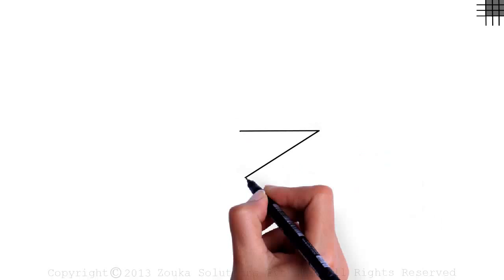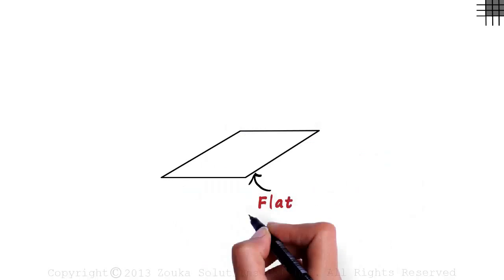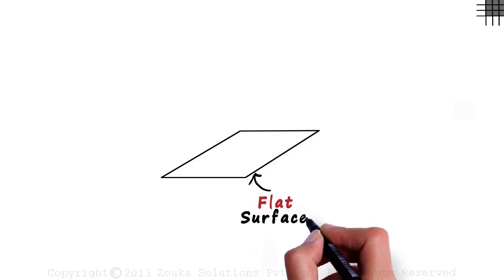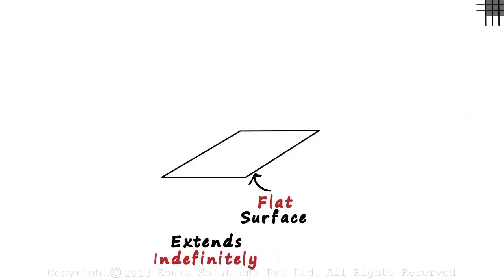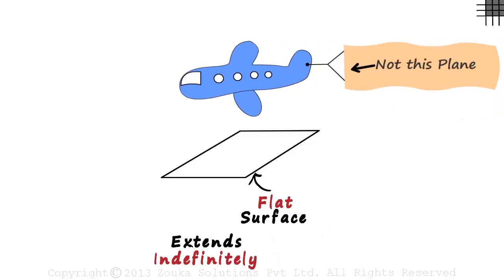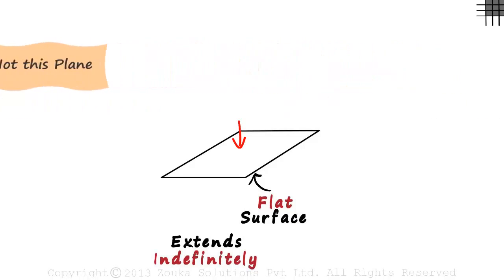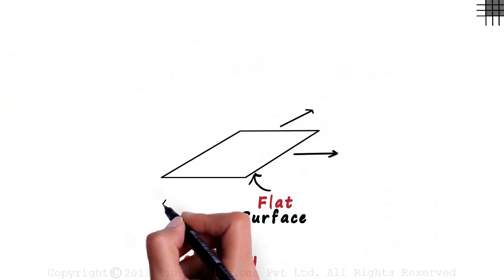Look at what is drawn on the whiteboard. It's a flat surface. A plane basically extends indefinitely in all directions. So if this surface extends indefinitely throughout, it will be a plane.